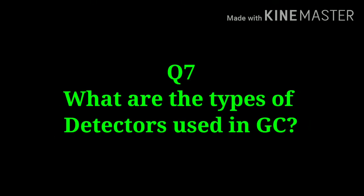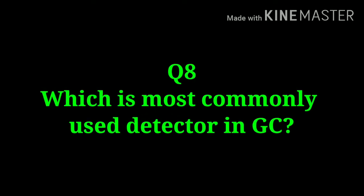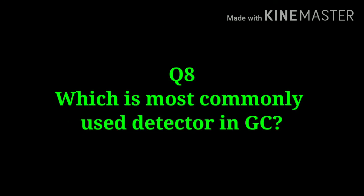What are the types of detectors used in gas chromatography? The answer is: flame ionization detector (FID), thermal conductivity detector (TCD), nitrogen phosphorus detector, electron capture detector, flame photometric detector, photo ionization detector, electrolytic conductivity detector, and mass spectrometer — a total of eight detectors are used.